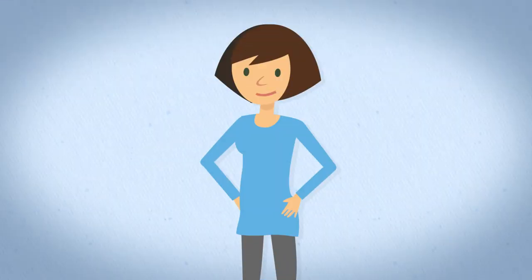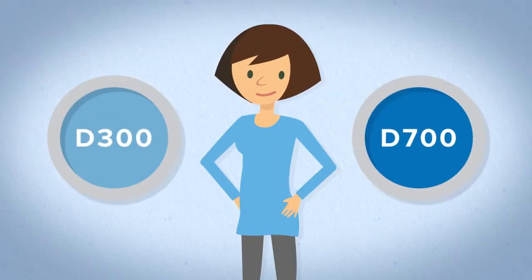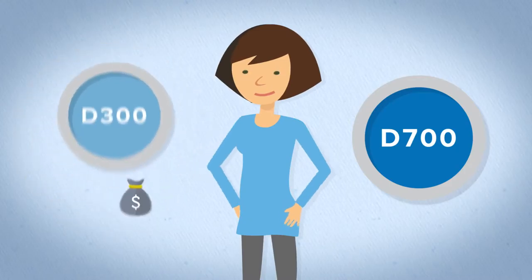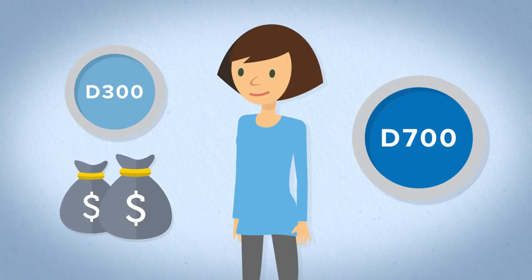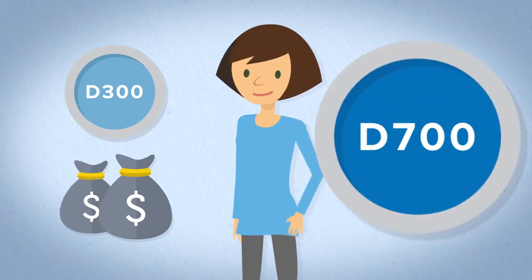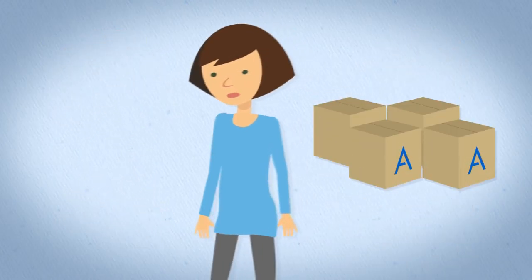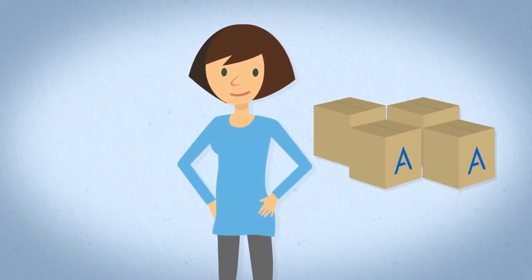Your upline bonuses work like this. The next person in your upline who is paid as director 300 or higher gets half the amount you do, and the next paid as director 700 or higher gets a fourth of your bonus size. So with a four case enrollment, you would get $80, the next director 300 would get $40, and the next director 700 would get $20.